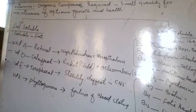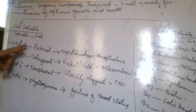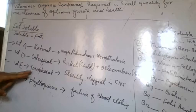Vitamins that come under the fat-soluble category are vitamin A, vitamin D, vitamin E, and vitamin K. Vitamin A is chemically called retinol, vitamin D is calciferol, vitamin E is tocopherol, and vitamin K is phylloquinone.